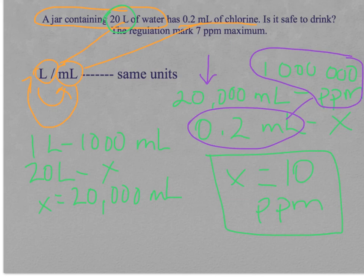The question, is it safe to drink? And the answer, it's not. Because seven parts per million is the maximum.